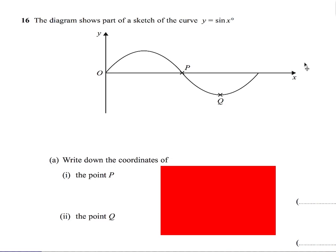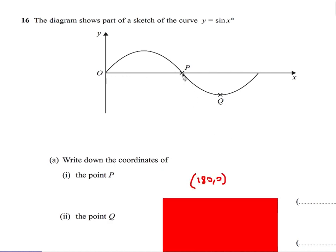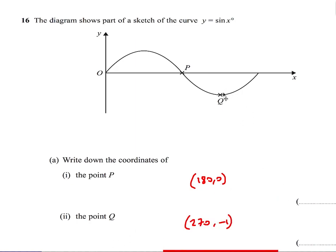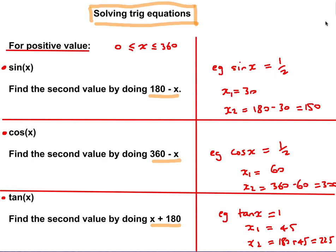Here's an example question to do with understanding the sine graph. They give us the graph and ask for the coordinates of point P — the x-coordinate is 180 and the y-coordinate is zero, so the answer is (180, 0). For point Q, the x-coordinate is 270 and the y-coordinate is negative one.